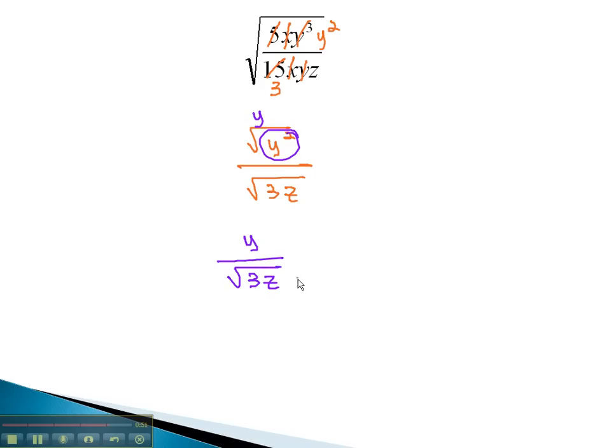Now, to rationalize the denominator, to get rid of the radical, we'll multiply by the missing radicals. To divide by an index of 2, we've already got one 3. We need one more 3. Similarly, we need one more z. Doing the same thing in the numerator, so that our numerator is y times the square root of 3z.